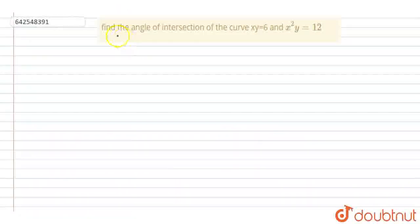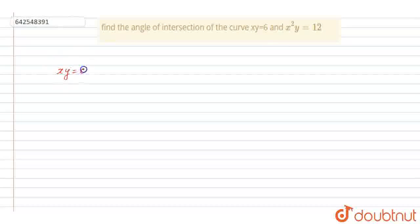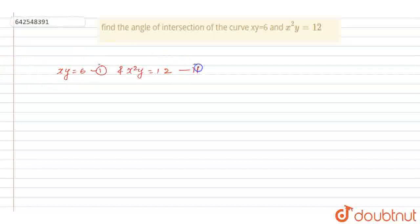This question says: find the angle of intersection of the curves xy = 6 and x² y = 12. So the equations of the two curves given are xy = 6 and x²y = 12. Let's say this is equation one and this is equation two.